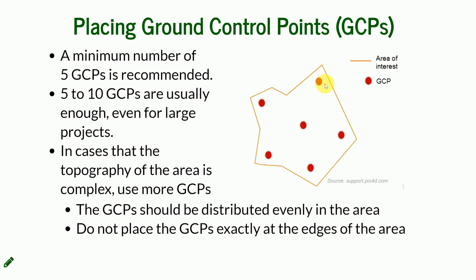Usually, if you have a GCP somewhere in the middle and the overlap is around 60–80%, it will be visible on up to 20 photos, with nine being the minimum. If you place it on the edge, there is a higher probability it won't be visible in enough photos.